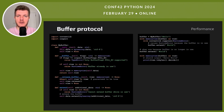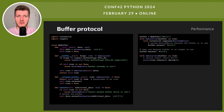PEP 688 makes the buffer protocol accessible from Python. Now classes with a __buffer__ method work as buffers. It introduces two new magic methods: __buffer__ and __release_buffer__. There is a new standard way to describe buffer objects in Python and a new set of options for creating buffers. This is great for sharing data, especially with C extensions, though most Python users may not find this very useful.